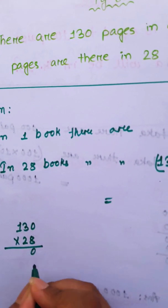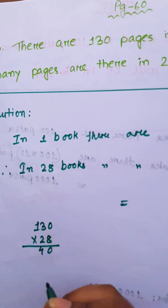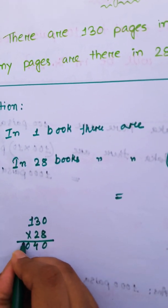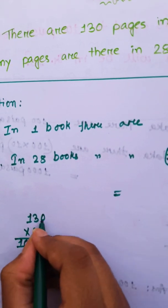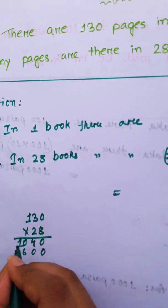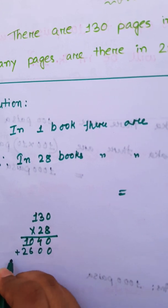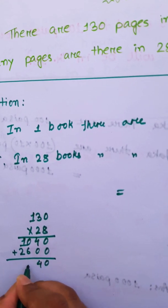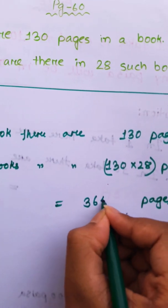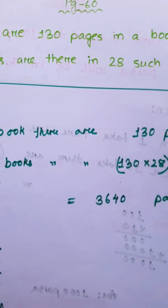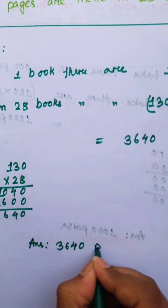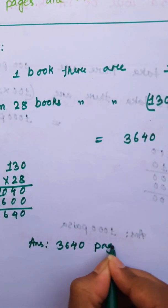Calculating 130 x 28: 8 zeros are 0, 8 threes are 24, 8 ones are 8 and carry 2 gives 10; then 2 zeros are 0, 2 threes are 6, 2 ones are 2. Adding partial products: 3640 pages. Therefore the answer is 3640 pages.